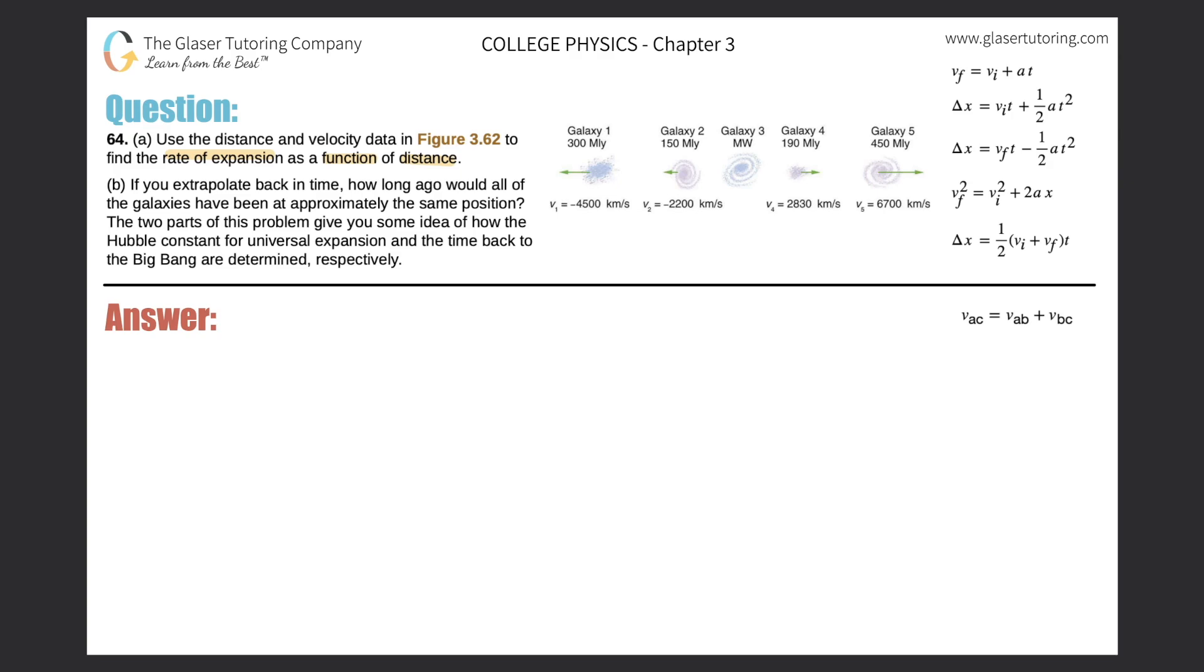We need to find this rate of expansion, meaning how fast these galaxies, like galaxy 2 and galaxy 1, are moving away from galaxy 3 as a function of their distance. I can think about this by doing a simple ratio. The rate of expansion, I'll call it rate sub e, maybe that'll be something like the velocity of that particular galaxy divided by the distance that that galaxy is from galaxy 3.